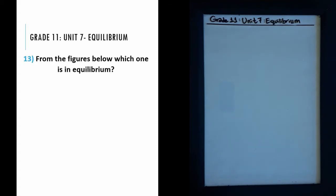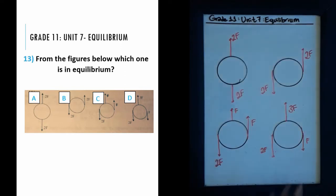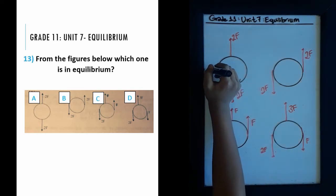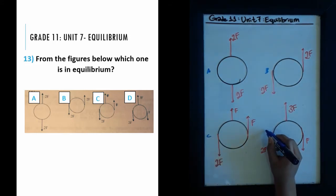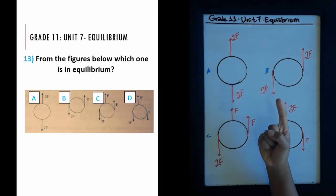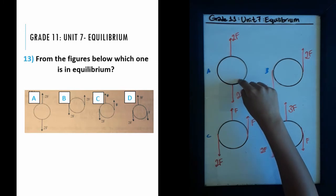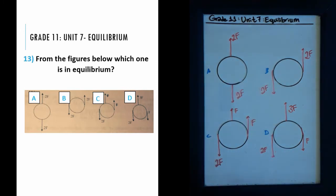We have four bodies — choices A, B, C, and D. The question asks which is in equilibrium. From the previous question, we know the two conditions: first, the summation of forces must equal zero, and second, the summation of torques must equal zero. Let's check both conditions for each choice.